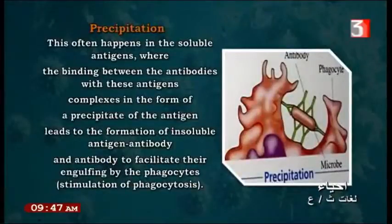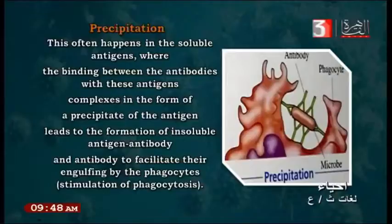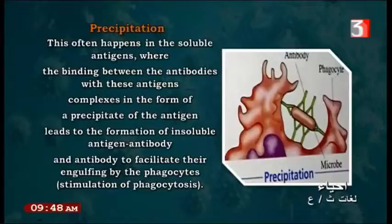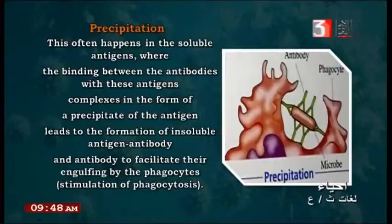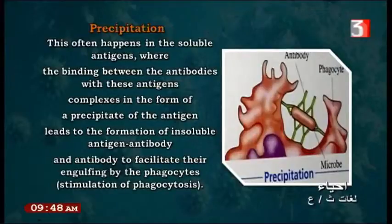What is precipitation? Precipitation often happens with a soluble antigen where binding between the antibody and this antigen forms complexes in the form of a precipitate. This leads to formation of a substance that is insoluble and not dissolved in water. This insoluble antigen-antibody complex cannot be moved with the blood, so it is engulfed by phagocytes, stimulating phagocytosis or action by lysosomes.